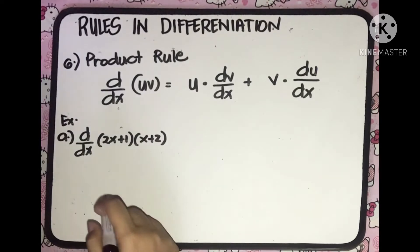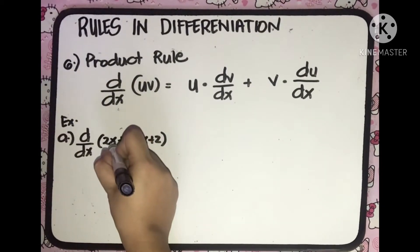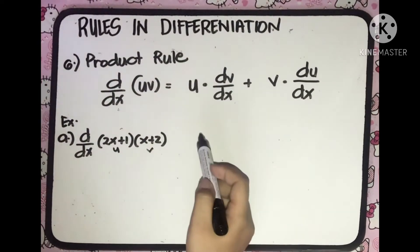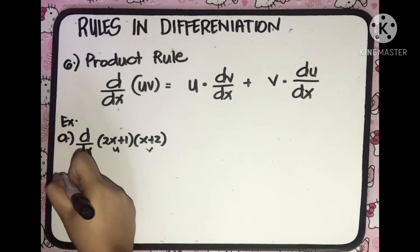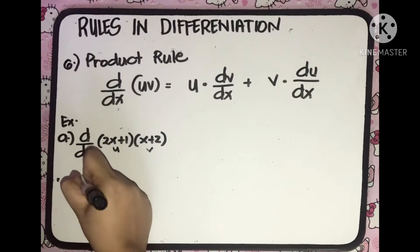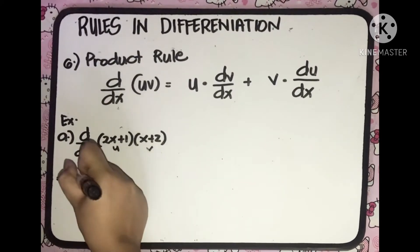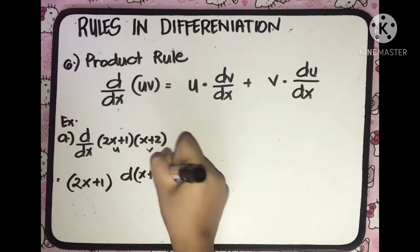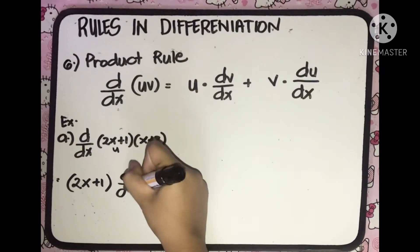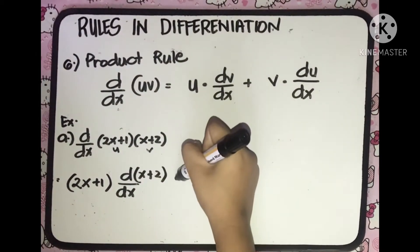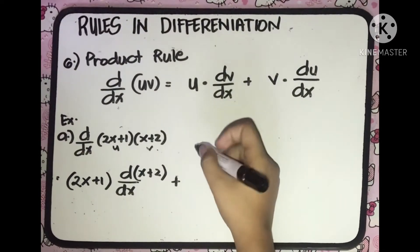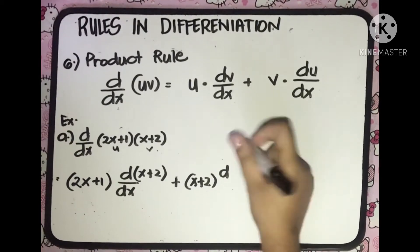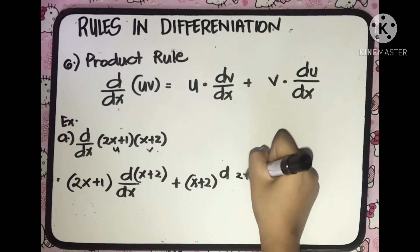Following the Product Rule: u equals 2x plus 1, and v equals x plus 2. We set up: u, which is 2x plus 1, multiplied by the derivative of v, which is x plus 2 with respect to x, plus v, which is x plus 2, multiplied by the derivative of u, which is 2x plus 1 with respect to x.